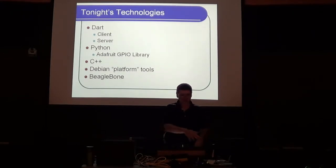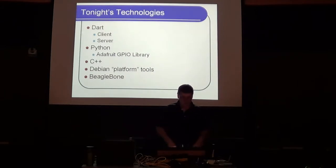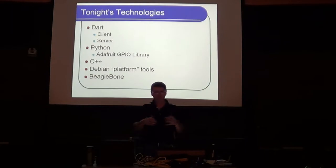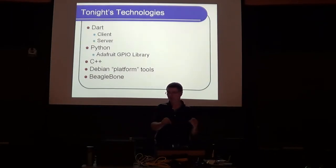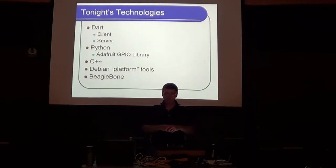One of the things that Dart doesn't have yet is a library that accesses the pins on the BeagleBone. The question is: how do you do things like turn the lights on and off, read the switches, read the sensors with Dart?